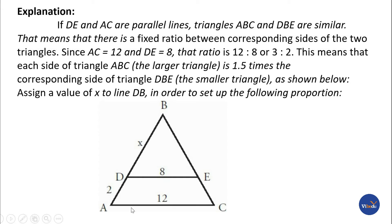For two similar triangles, we use the proportion method: AB divided by DB equals AC divided by DE.